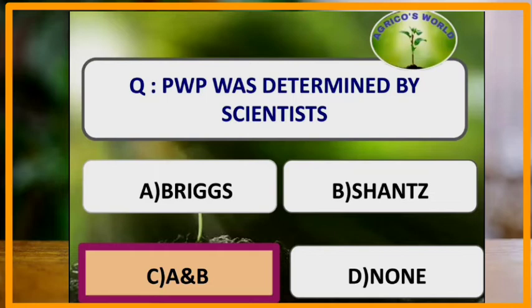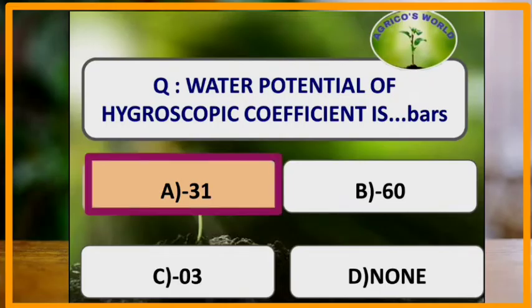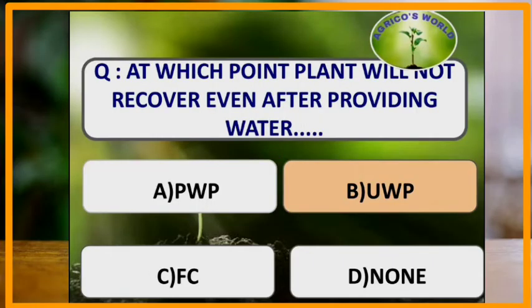Permanent wilting point was determined by the scientists Briggs and Shantz in the year 1912, and the plant used by them was sunflower. The water potential of hygroscopic coefficient is minus 31 bars.